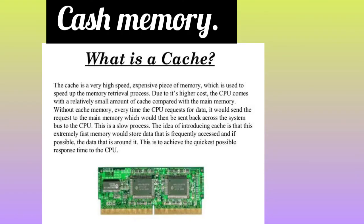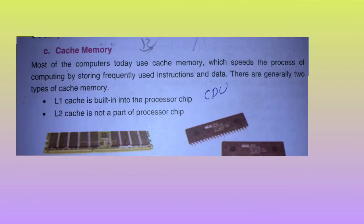BIOS is a standard program which loads the operating system from a secondary storage device. Cache memory is used in most computers today because it is the fastest memory — faster than RAM. It holds all those instructions and data which are frequently used. Cache memory takes frequently used data and instructions from RAM and provides them directly to the CPU. It exists between the CPU and RAM, which allows the CPU to work at high speed.